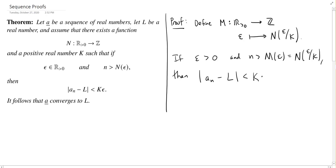So over here, this will be less than K times the input. Well, the input is epsilon over K. But K times epsilon over K is equal to epsilon.